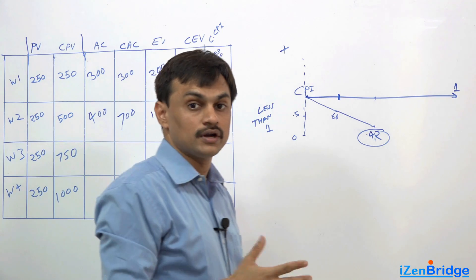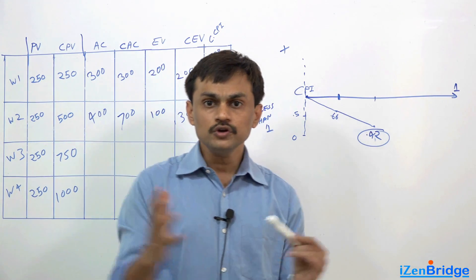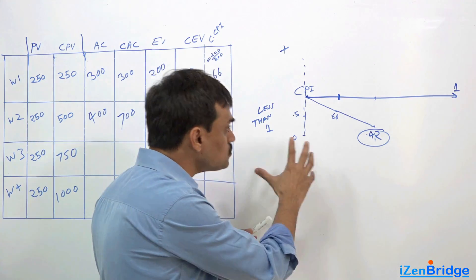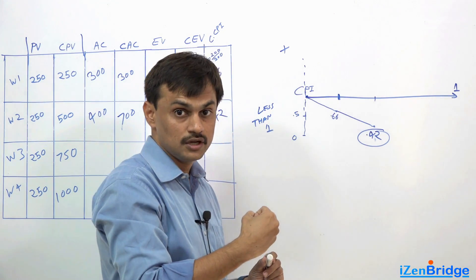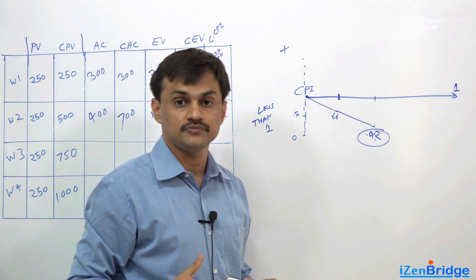This is our current rate of working. Now you need to figure out what performance you should achieve as far as cost performance index is concerned, so that you meet your project objective.